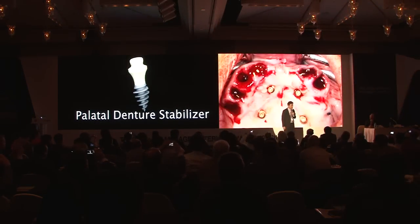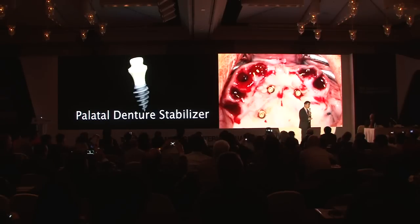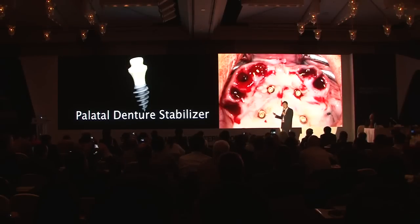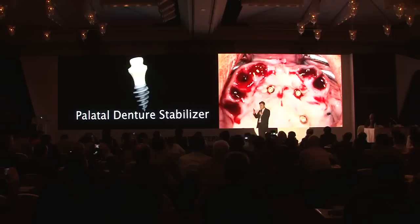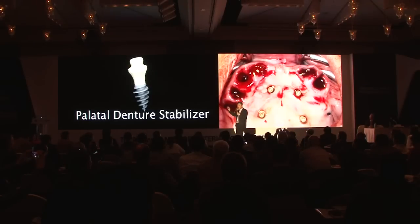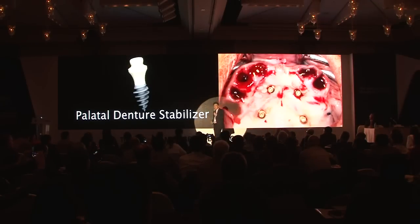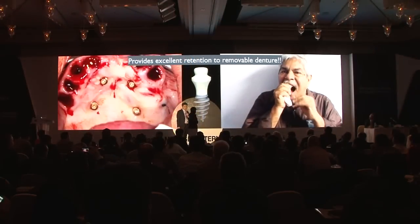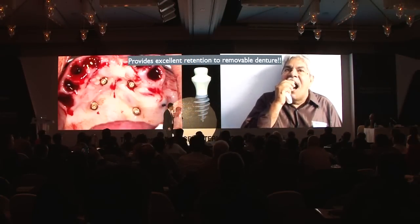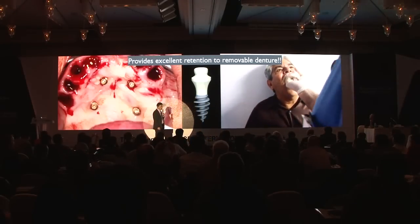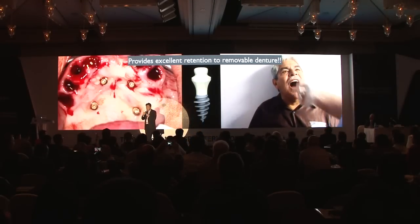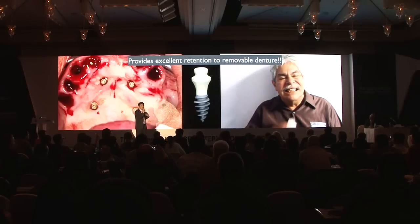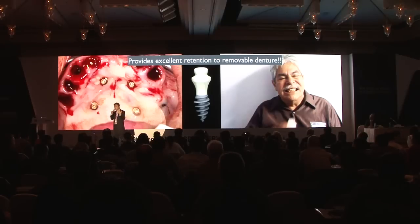I would like to talk about my palatal denture stabilizer because it plays a big role in my practice, especially when I do extractions and try to deliver an immediate denture. Sometimes the immediate denture does not fit, but by putting three or four palatal implants, we are able to stabilize any loose denture. When we do a full mouth implant case and GBR, we grind the buccal flange to avoid unwanted forces on the buccal wall.